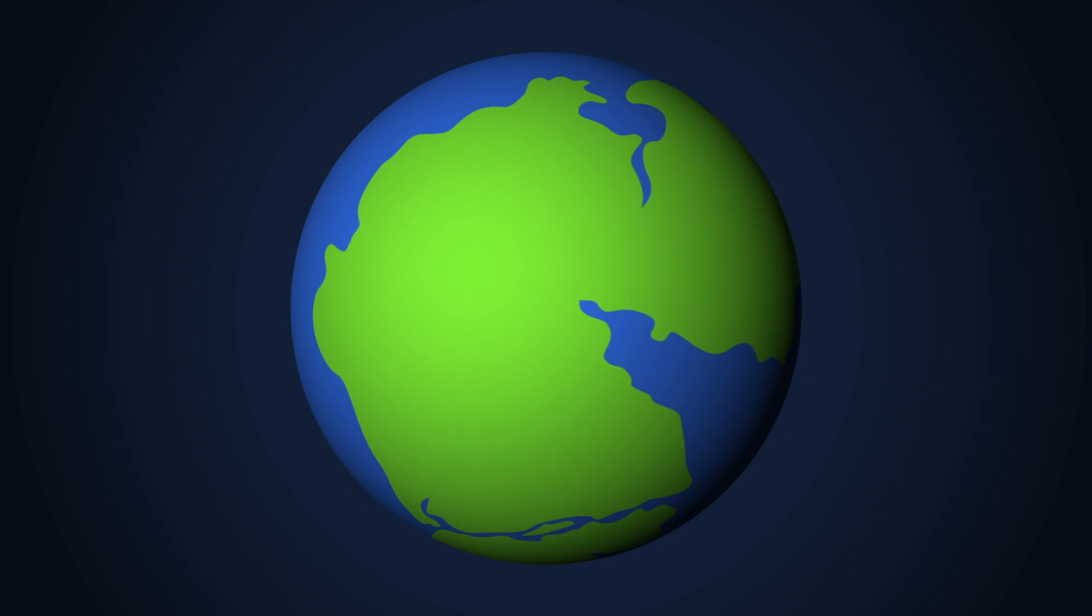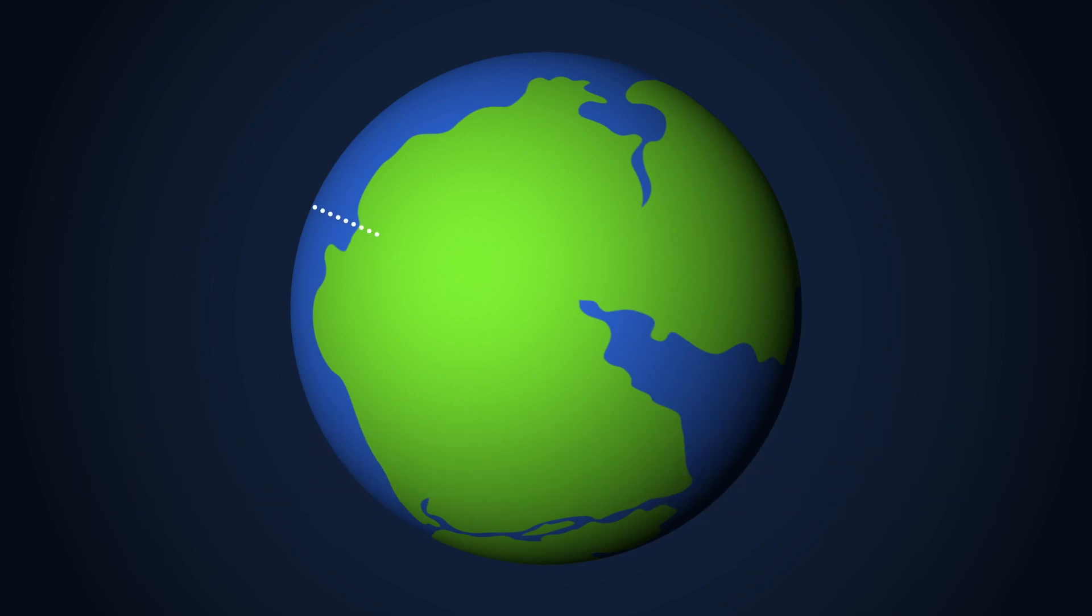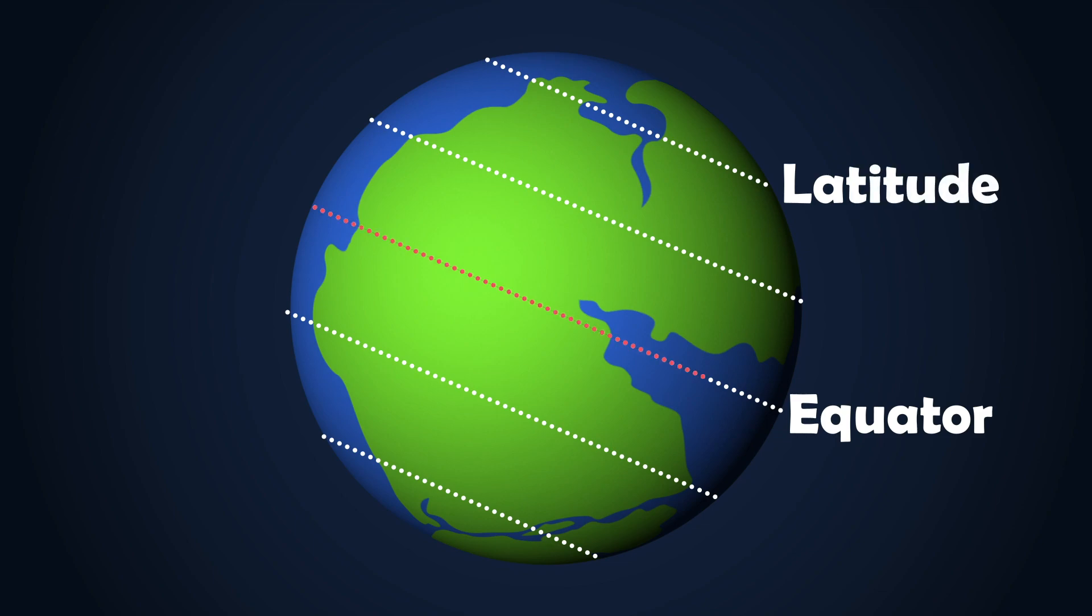This land was known as Pangea, also known as a supercontinent, and it was largely centered around the equator. The equator is the center-most latitudinal line of the Earth, and the warmest.